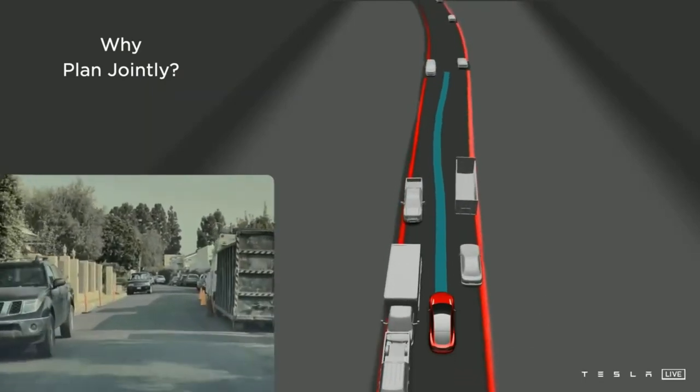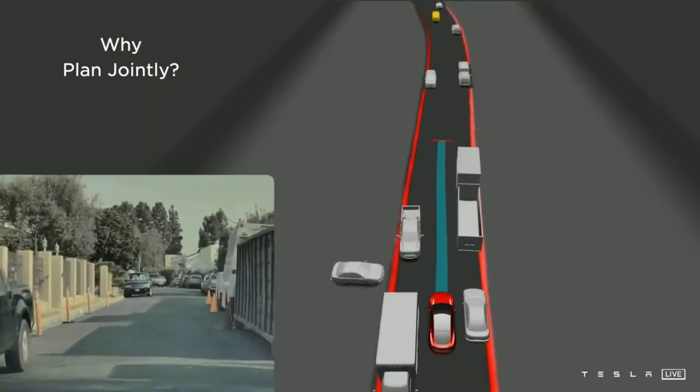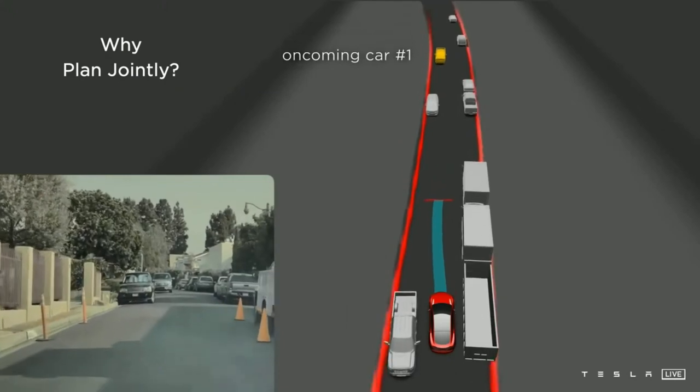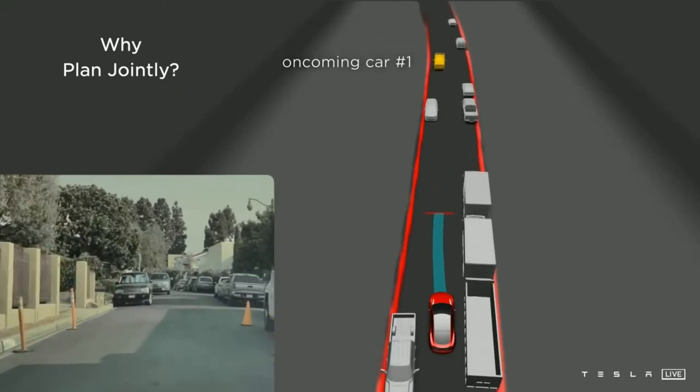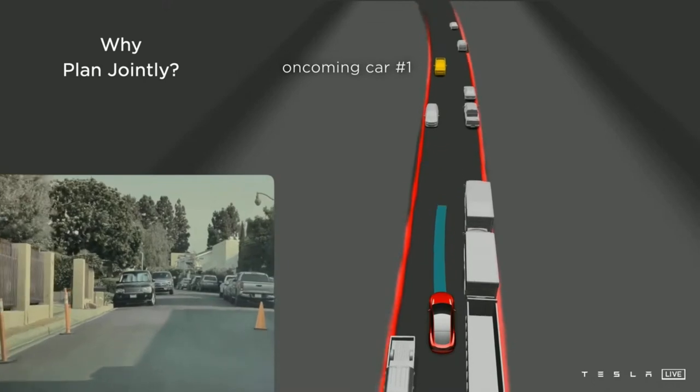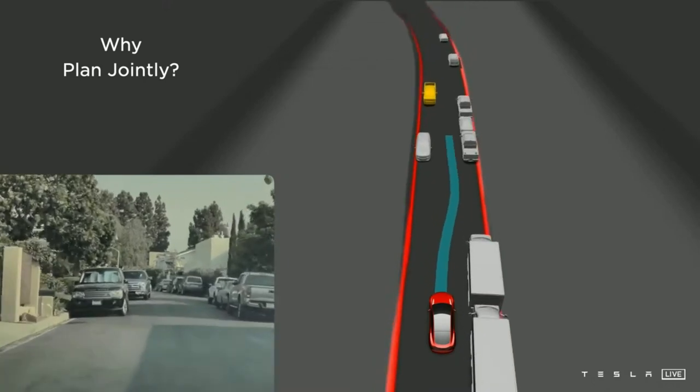In this example you will see that there is an oncoming car detected in yellow. Because of that, the red car first plans to yield to this car due to its higher velocity, but then it realizes that the yellow car is also yielding and slowing down, so our ego path changes and we plan to overtake or go through the parked cars.